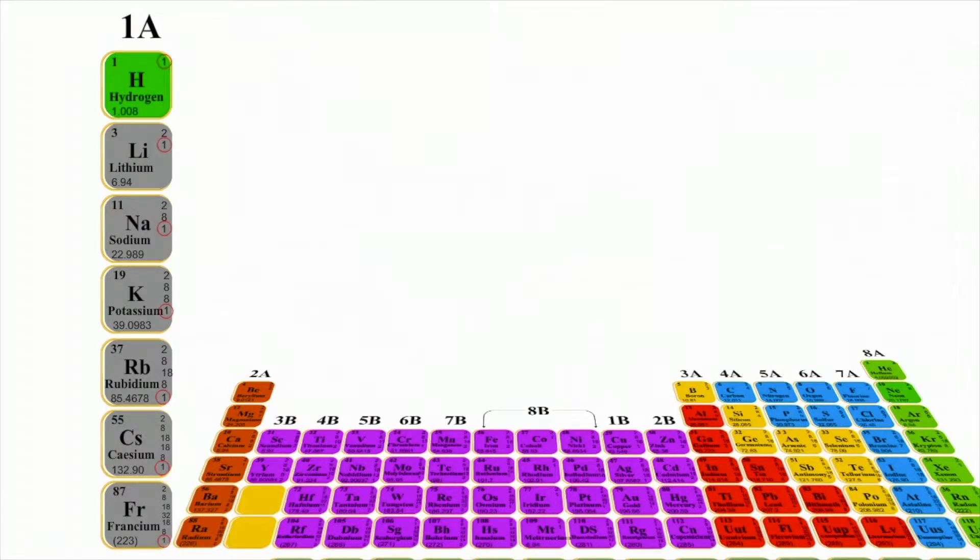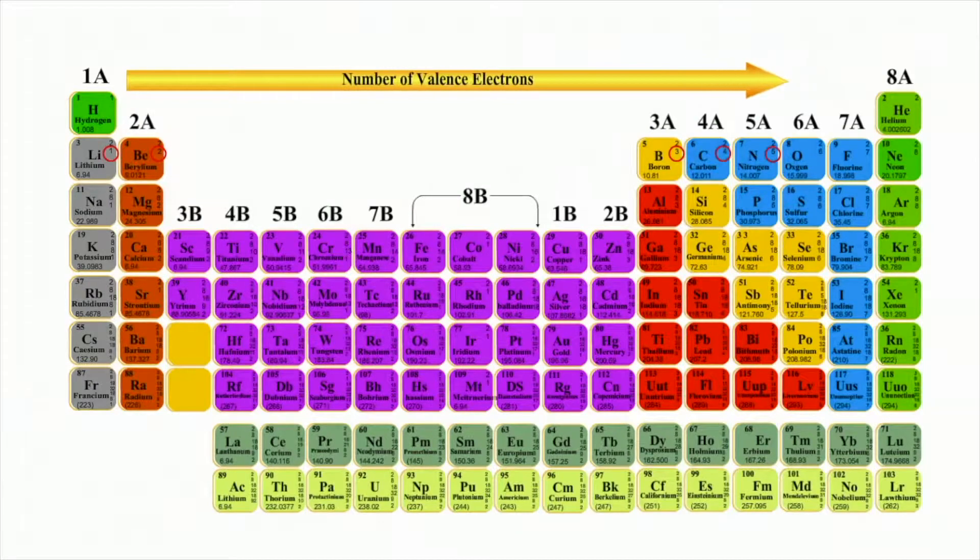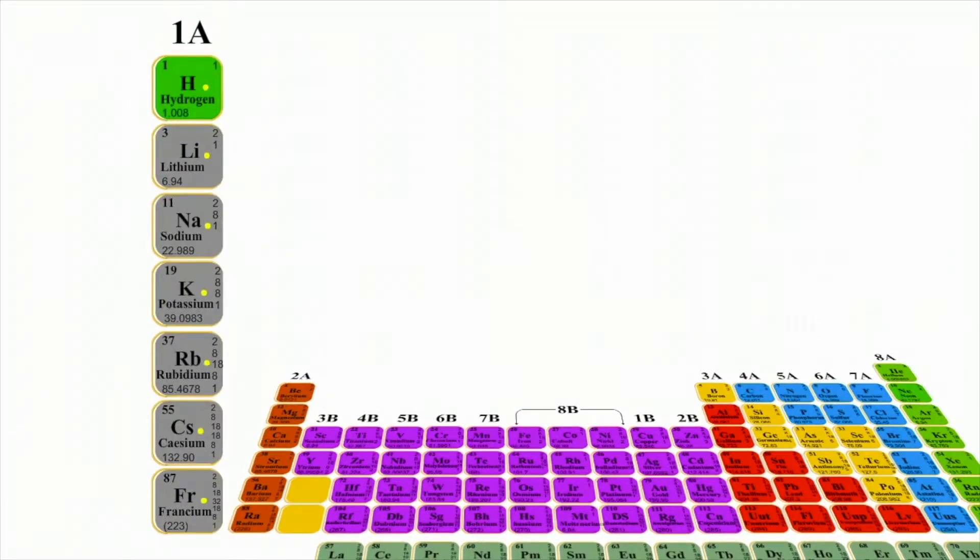Moving from left to right, the number of valence electrons increases. Elements in group 1A, such as lithium, have one electron in their outer shell.